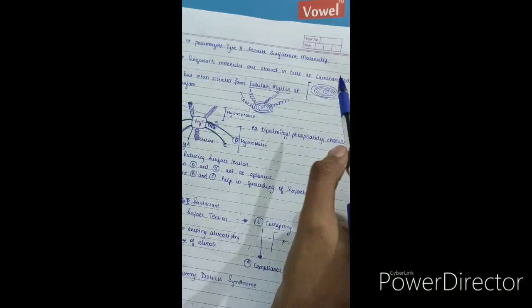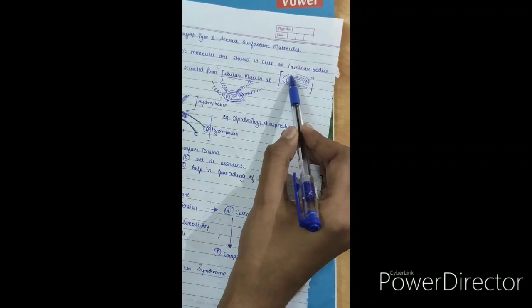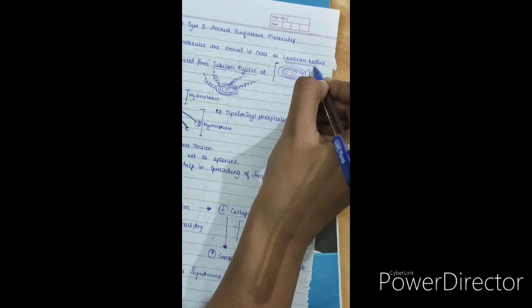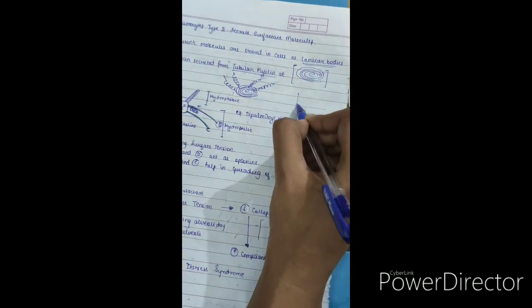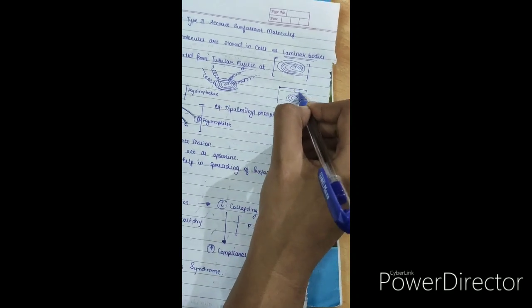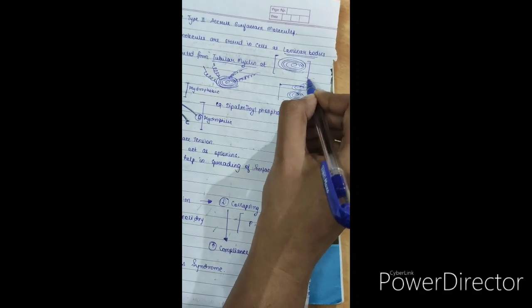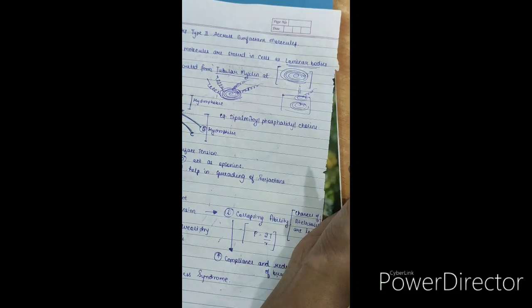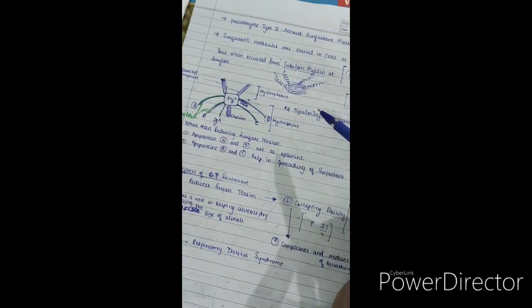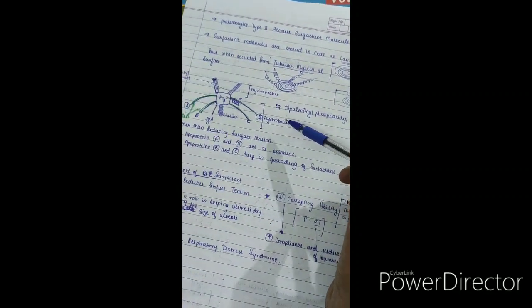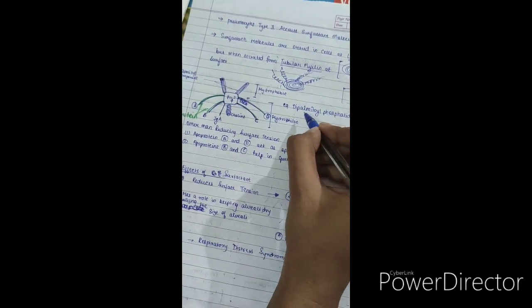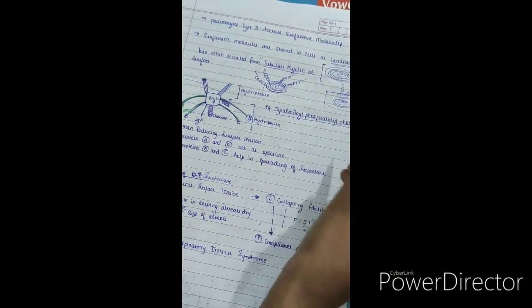Surfactant molecules are stored in a lamellar form, and they say these are stored as lamellar bodies. But when these are secreted, suppose they are in the form of lamellar bodies, and when they come at the surface, these project in the form of tubular myelin. Now I have drawn a surfactant molecule just for the purpose of understanding. This is not the actual structure. A famous example of this surfactant molecule is dipalmitoyl phosphatidylcholine.